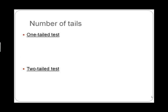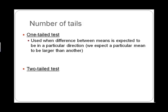Another thing relevant to significance testing is the number of tails in the tests we do. A one-tailed test is used when the difference between the means is expected to be in a particular direction — we expect one mean to be larger than another. For example, our alternative hypothesis might state that the mean for the no-training group is expected to be less than the mean for the training group, meaning people in the training group are expected to have higher overall performance. When we do this, we're typically using a one-tailed test.